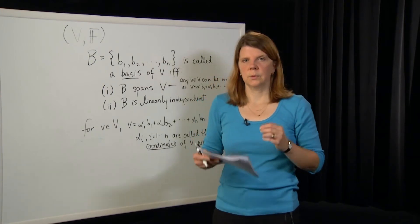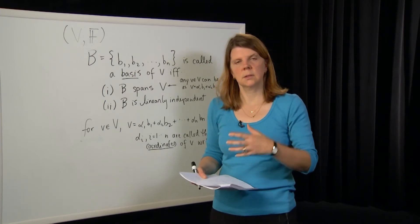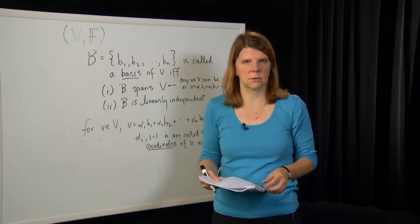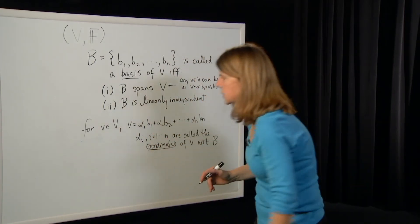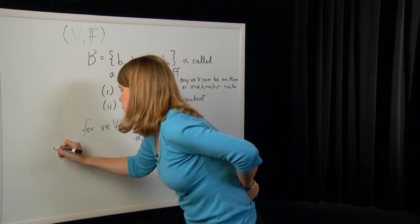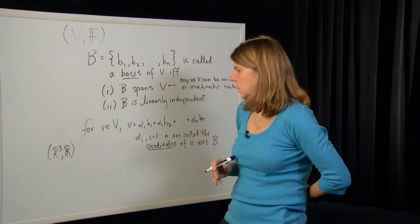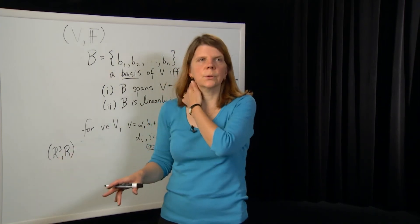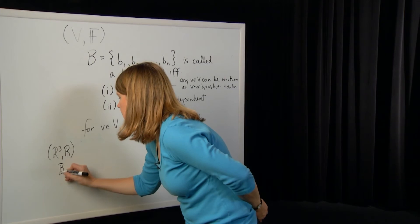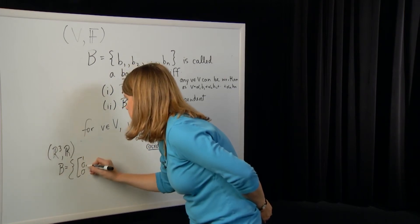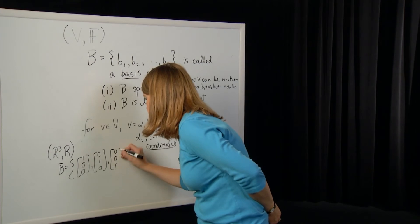To recap: we've talked about subspaces of vector spaces, linear independence and dependence, and the important concept of a basis. Let's close with simple examples. For R3 over the field of real numbers, the standard basis consists of the unit vectors along each axis — the standard basis elements. There are three of them, confirming R3 is a three-dimensional space.